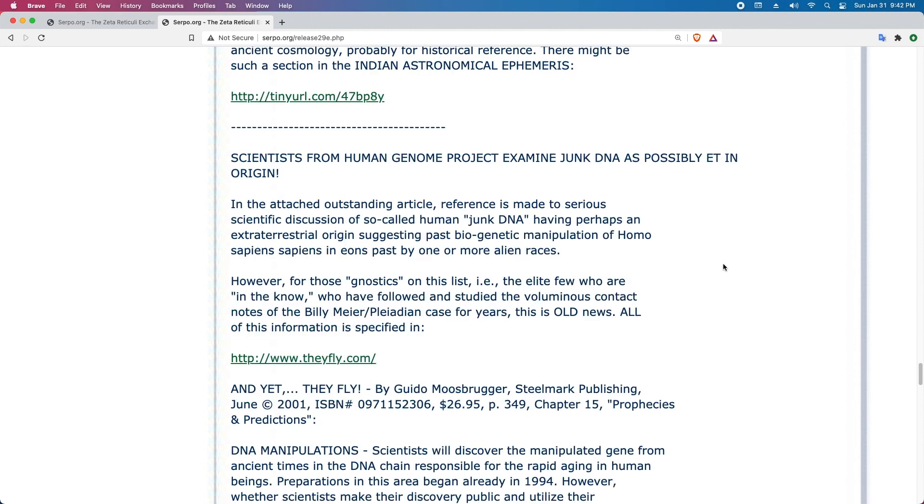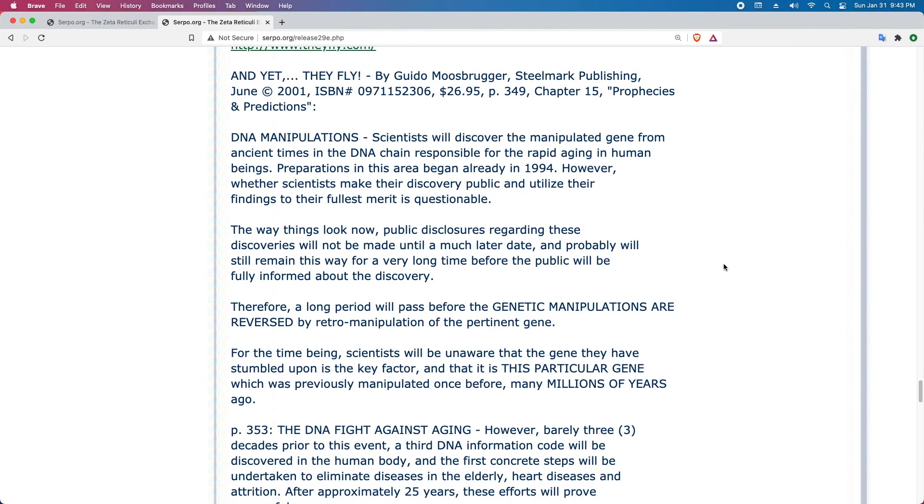Scientists from Human Genome Project examined junk DNA as possibly ET in origin. In the attached outstanding article, references made to serious scientific discussions of so-called human junk DNA having perhaps an extraterrestrial origin, suggesting past biogenetic manipulation of Homo sapiens sapiens in eons past by one or more alien races. However, for those Gnostics on this list, for example, the elite few who are in the know, who have followed and studied the voluminous contact notes of Billy Meier Plejaren's case for years, this is old news. All of this information is specified in www.theyfly.com And Yet They Fly by Guido Moosbrugger. DNA Manipulations: Scientists will discover the manipulated gene from ancient times in the DNA chain responsible for the rapid aging in human beings. Preparations in this area began already in 1994. However, whether scientists make their discovery public and utilize their findings to their fullest merit is questionable.